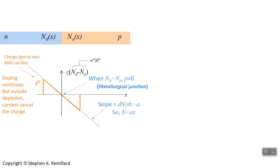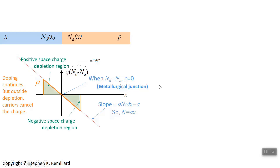Let's talk about charge. The charge due to ions keeps going up or down, but the net charge is shown in this bow-tie shaped graph. Rho is the net charge due to both ions and carriers. Far enough from the metallurgical junction you're out of any depletion region, so electrons or holes are present. In the region around the junction, there's depletion — all space charge is due entirely to ions. The positive space charge region is on one side, the negative on the other, and from one side of the bow-tie to the other is the depletion region.